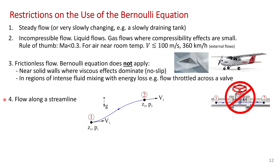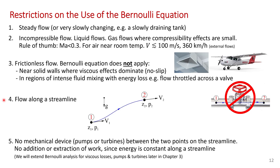Bernoulli's equation applies to flow along a streamline, and when doing numerical examples I always draw a streamline to remind myself of that limitation. Additionally, the total energy at one must equal the total energy at two, so you can't be adding or removing energy between those points. Therefore, you cannot have a pump or turbine between the two points on the streamline — no addition or extraction of work, since energy must be constant along the streamline. Later in this chapter we'll relax this assumption by modifying Bernoulli's equation into what's called the general energy equation, which handles pumps, turbines, and valve losses.